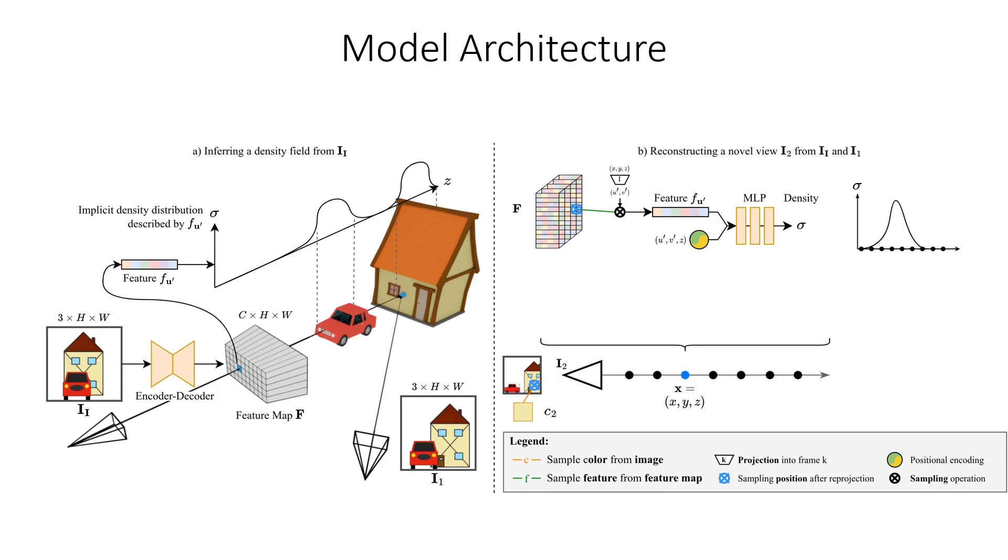In contrast to a neural radiance field, our density field does not store color. Therefore, to still perform volume rendering, we again reproject the point and sample color directly from the image. Note that unlike the feature sampling, we can also sample color from any other available view, for example image 1 in the illustration. This is very important during training.